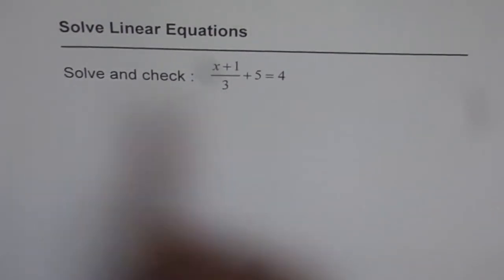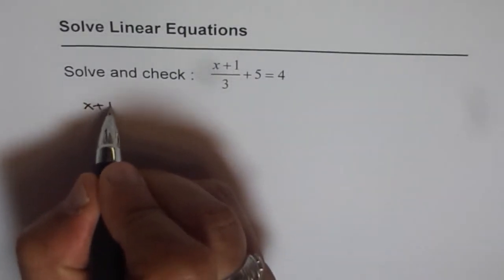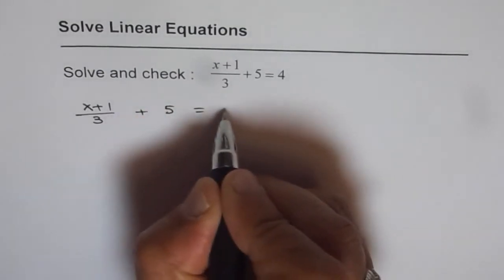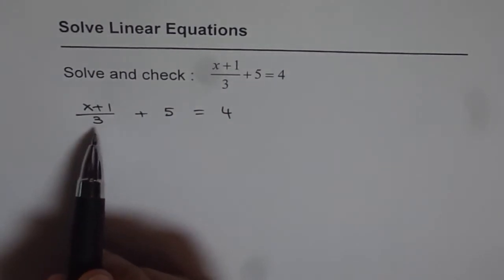Let's start with the question itself. It says x plus 1 over 3, plus 5 equals 4. To solve this kind of equation, the first step is to get rid of fractions.